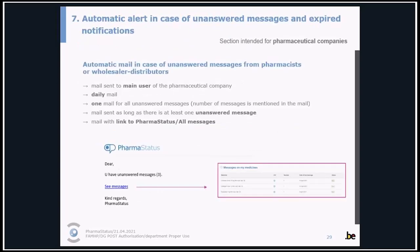An automatic alert in case of unanswered messages from pharmacies and wholesaler distributors will be sent to the main user of the pharmaceutical company on a daily basis. There is only one mail for all unanswered messages, and the number of messages is mentioned in the mail. The mail is sent as long as there is at least one unanswered message. In the mail you can find a link to PharmaStatus that will send you to the section 'all messages.'